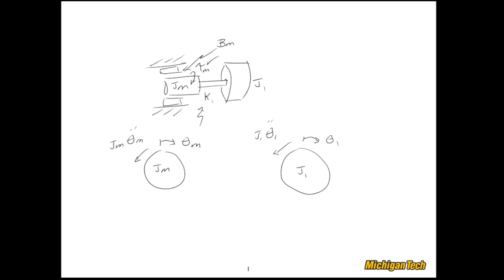Let's take care of the externally applied torque. Let's say that this direction is the positive theta_m direction, so here's my externally applied torque, tau_m. We have a viscous damping coefficient bm, and that's going to act in the opposite direction of the positive displacement theta_m — actually theta_m dot — so it's going to be like so. The only other moment we have to take care of is due to the flexible shaft that connects the two disks.